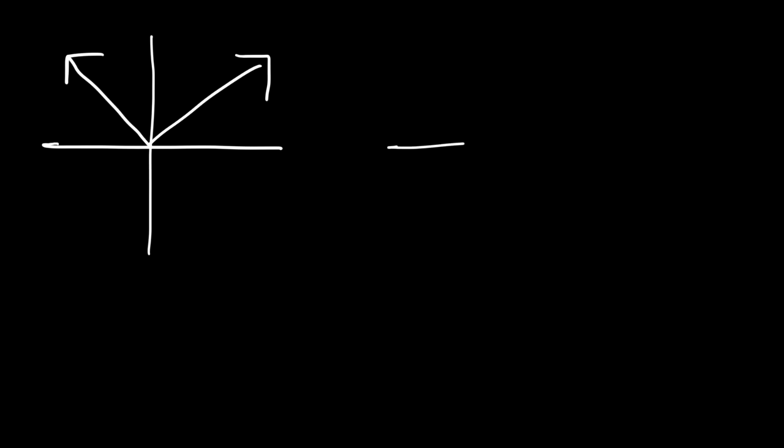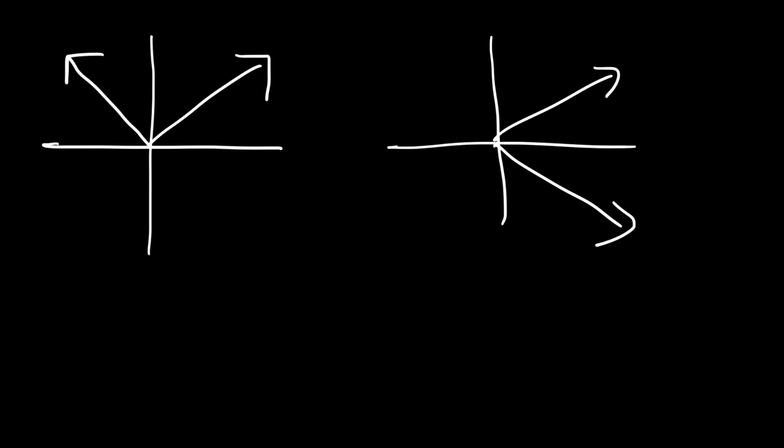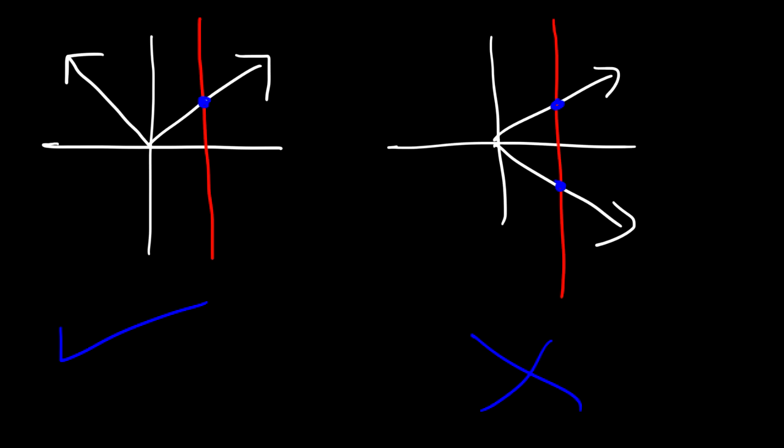Next, you need to determine if a graph represents a function. Looking at two graphs, which is a function and which is not? There's something called the vertical line test. If you draw a vertical line and the curve touches it at one point, it's a function. If it touches at two or more points, it's not a function. In the first example, the curve touches the vertical line at one point, so it's a function. In the second example, the curve touches the line at two points, so it's not a function.